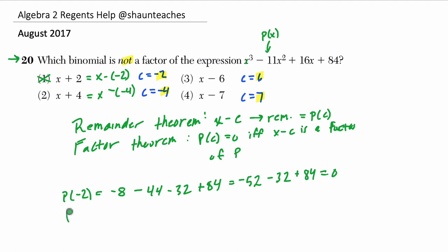Then we're going to plug in p of negative 4. Okay, so this 0 means it is a factor, so we want not a factor. So now we have negative 4 cubed, that's negative 64, minus 11 times 4 squared, 11 times 16, which is 176, and then plus 16 times negative 4, so that's minus 64, and then plus 84.